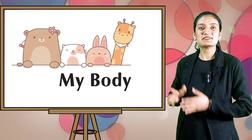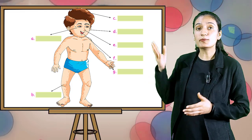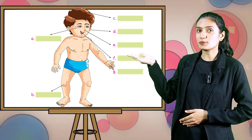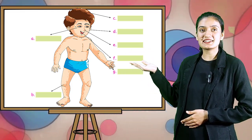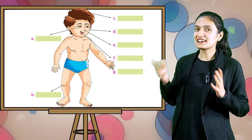Now, let's understand my body. Label the picture with words given in the box below. Here are the boxes and here is the kid. You have to label his body parts. So, let's start.